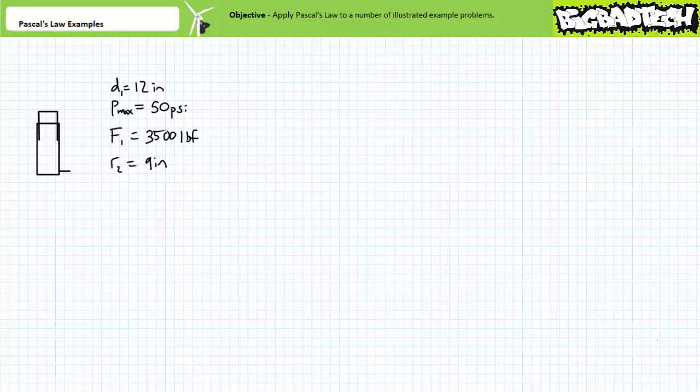Feel free to rewind, review, or revisit any material your self-assessment indicates you need improvement on. This lecture operates under the assumption you can perform circular and annular area calculations and have watched the Pascal's Law Lecture available at the Big Bad Tech channel. If you haven't watched this lecture yet or only dimly recall its contents, please take the time to do so now.